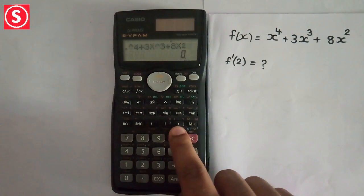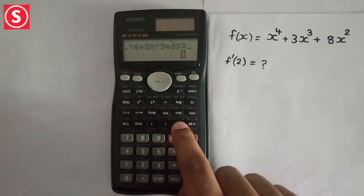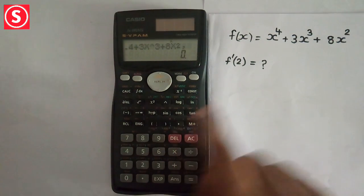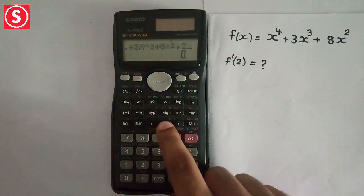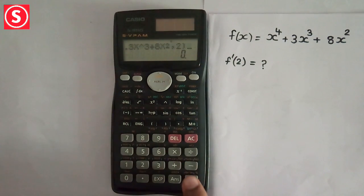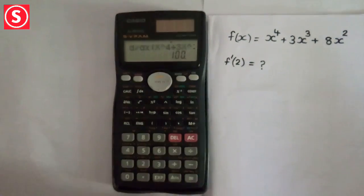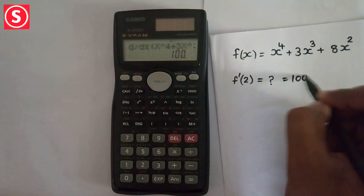So put a comma. Comma is near to the closing bracket. Press the comma button. Then the point is 2, so press 2. Now close the bracket, then press equal to. We will get the answer as 100.